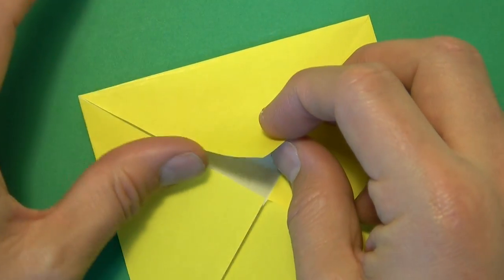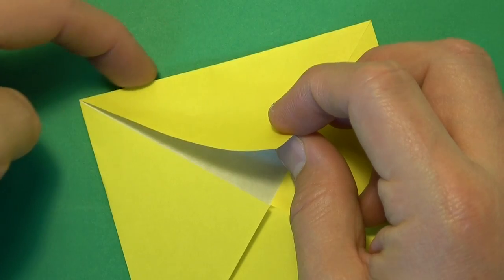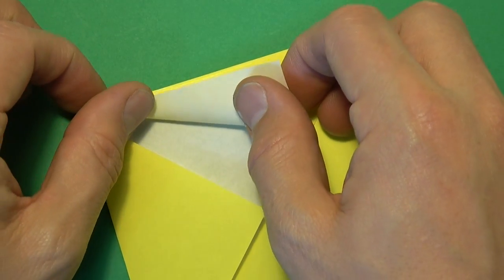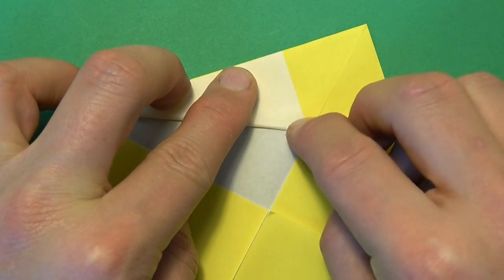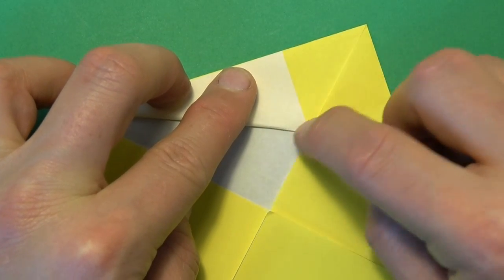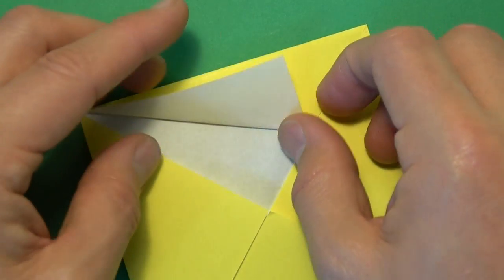Now let's fold this flap up so that this edge aligns with the top here. But we're not going to make the whole fold. We just need to flatten right here. So we make a pinch mark there. And unfold.